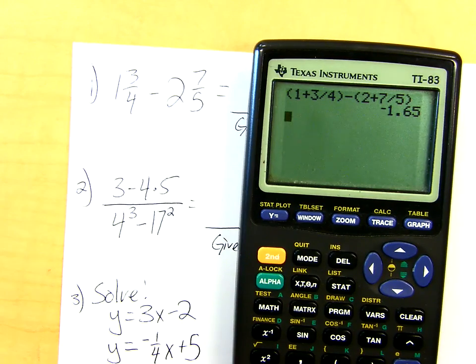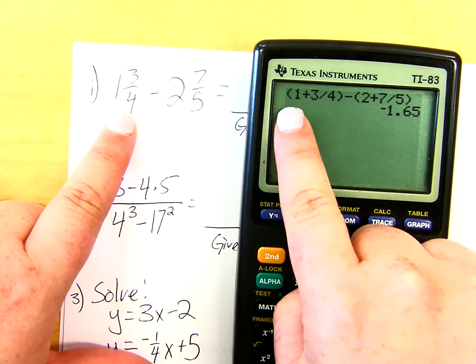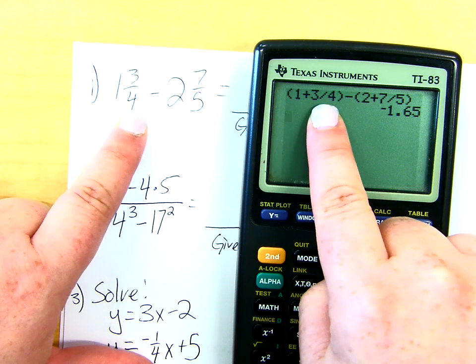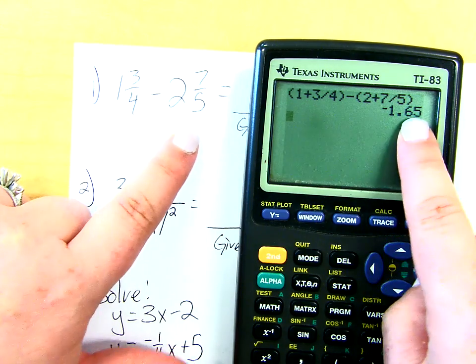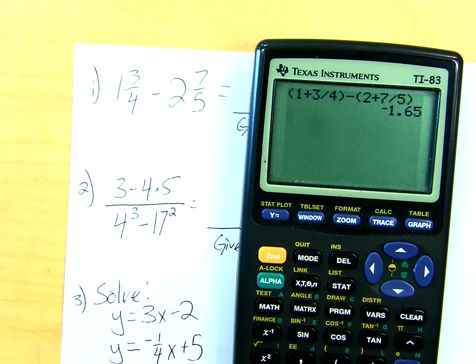So we are just going over some graphing calculator stuff. We typed in our mixed number as 1 and 3 fourths in parentheses, minus 2 and 7 fifths. It spit out a decimal.